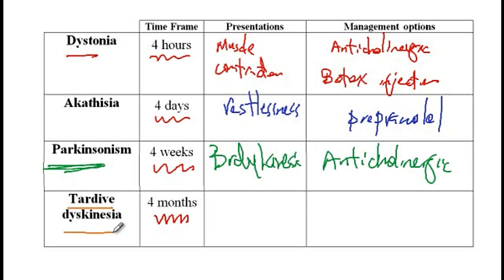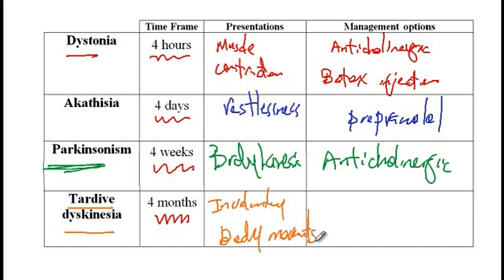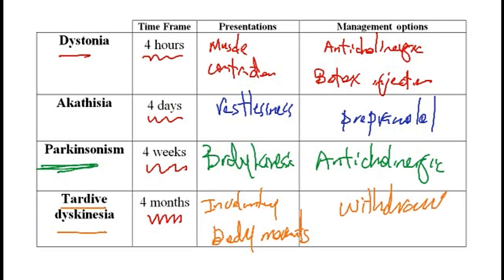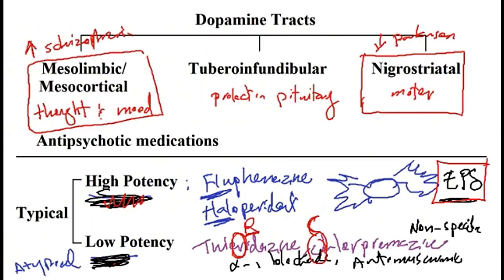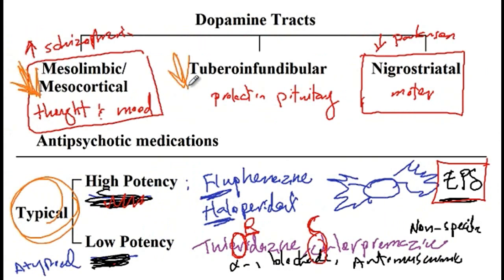Finally, patients can present with tardive dyskinesia, which involves involuntary repetitive body movements most commonly affecting the lips and tongue. Treatment requires withdrawing the drug. The reason patients develop these extrapyramidal symptoms is that typical antipsychotics decrease dopamine in the mesolimbic and mesocortical tracts as well as other tracts, including the nigrostriatal tract.